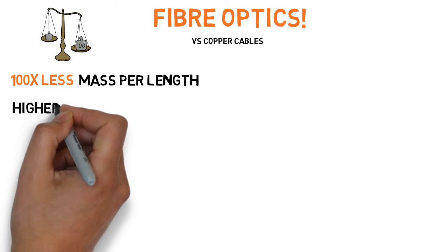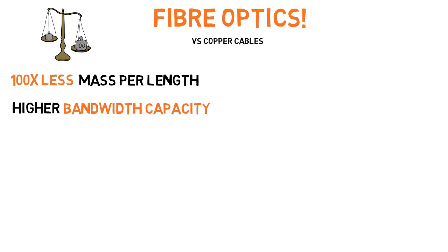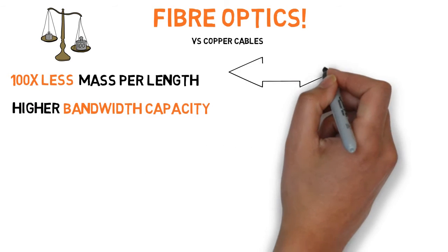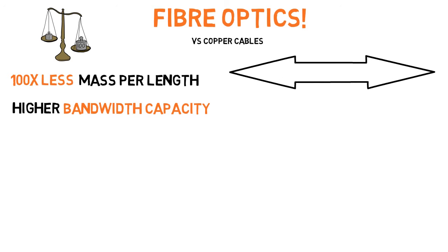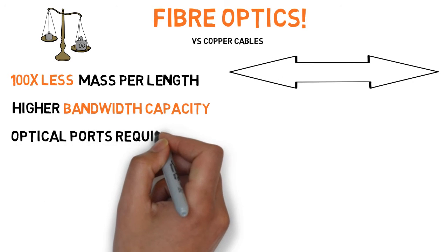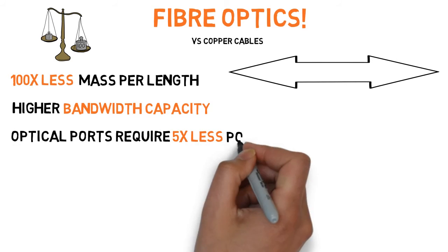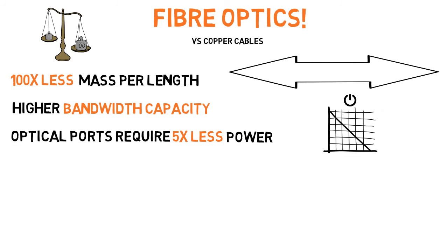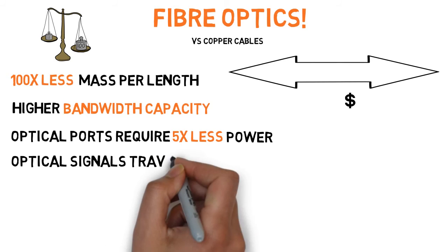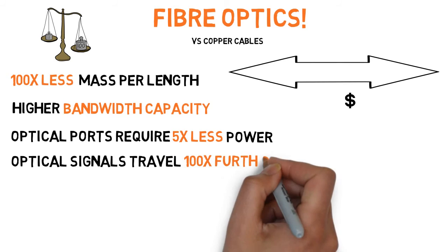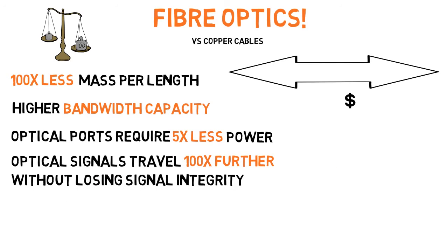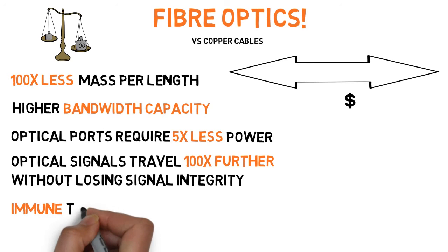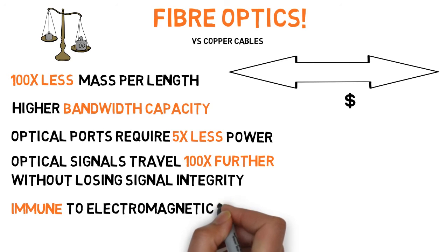Next, fiber optic cables provide a higher bandwidth capacity, meaning that more data can be transmitted in a smaller amount of time. Optical ports require 5 times less power, also meaning that they require less money to maintain. Optical signals can travel 100 times further without losing signal integrity. Optical cables are also immune to electromagnetic interference.